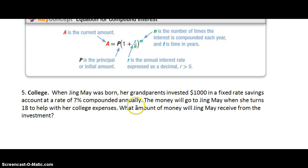When Jing Mei was born her grandparents invested $1,000 in a fixed rate savings account at a rate of 7% compounded annually. The money will go to Jing Mei when she turns 18 to help her with her college expenses. What amount of money will Jing Mei receive from the investment? So let's think about this. What have they told us? $1,000. That's going to be our initial amount. So P equals $1,000. They also told us a rate of 7%. Let's not forget we need to express our rate as a decimal. So our rate of 7% is going to be 0.07.